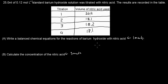The question itself is: 25 mL of 0.12 mol per liter standard barium hydroxide solution was titrated with nitric acid. The results are recorded in the table below. Part A: Write a balanced chemical equation for the reaction of barium hydroxide with nitric acid. That's worth one mark.